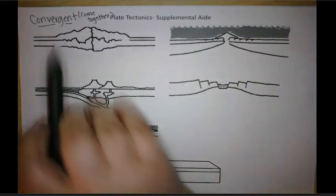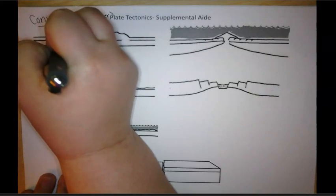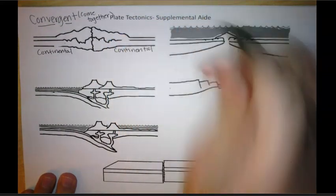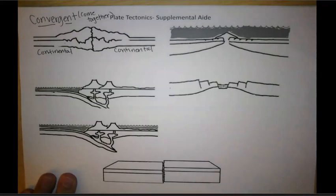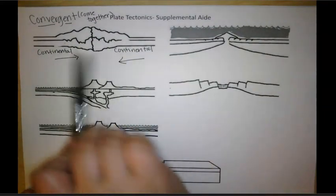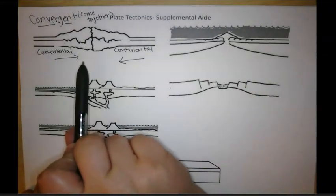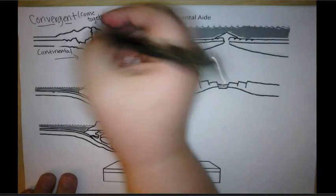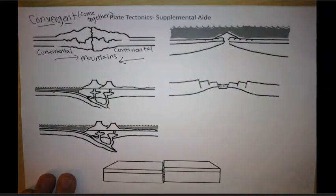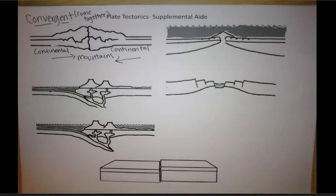Our first one, we're dealing with two continental plates, meaning two plates that are land. So we're gonna write 'continental' and 'continental.' We're gonna draw those arrows coming together, pushing inward. Because these are two continental plates, neither of them is more dense than the other, so they don't really dive down underneath each other. Instead, they push each other up, so what we get on land is mountains forming. We'll also get earthquakes that form as well in these places.